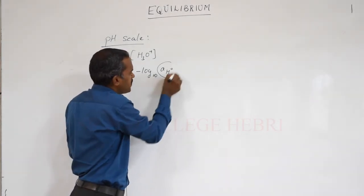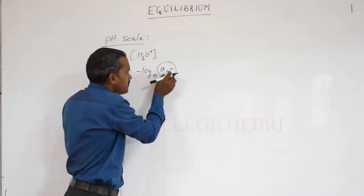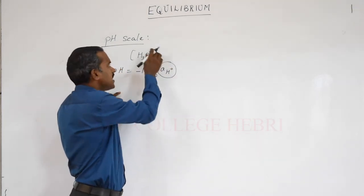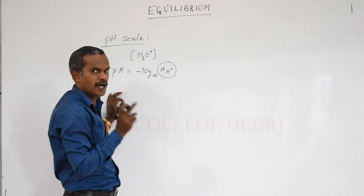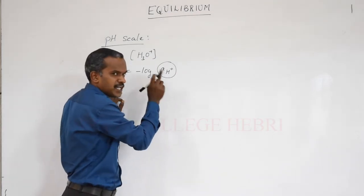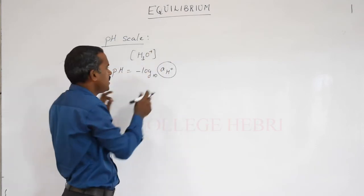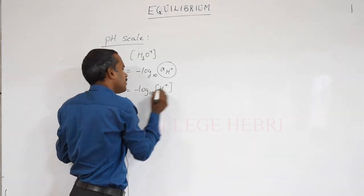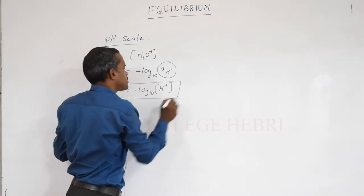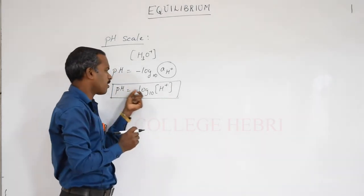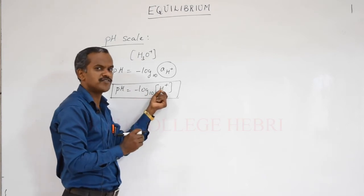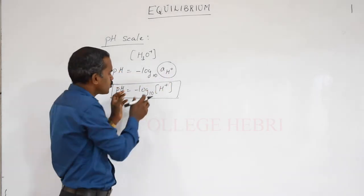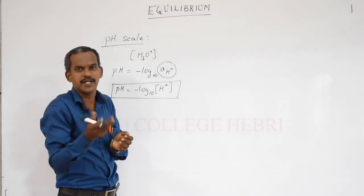The activity of H+ has no proper unit, but its magnitude in a dilute solution is comparable to the concentration of H+ only. So we can write pH equals negative logarithm to the base 10 of hydrogen ion concentration. pH is the negative log base 10 of hydronium ion concentration, or hydrogen ion concentration, or the activity of H+. Using this, you can easily calculate the pH of any solution.